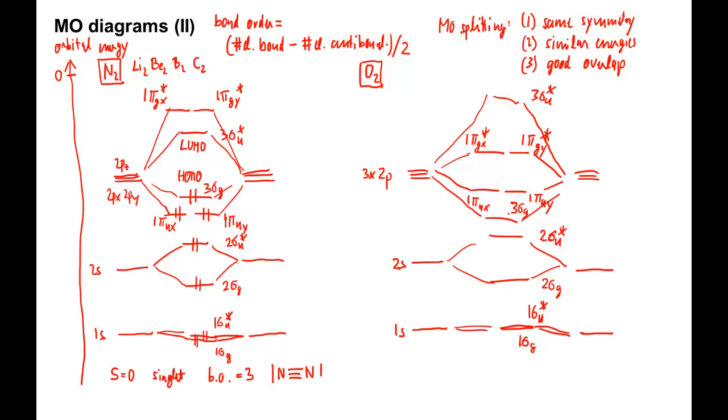We know this from experiment and numerical calculations. The MO order for dioxygen is also valid for F2 and neon-2. Together, the two MO diagrams on this slide cover all the homonuclear diatomics of the second row of the periodic table. Let's fill in the electrons for the ground state. Oxygen has 16 electrons.